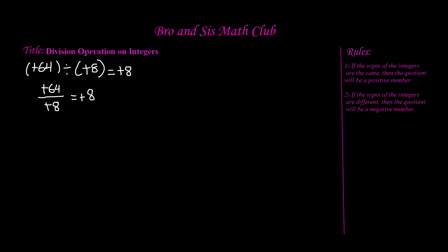Now let's go ahead and do another example. Let's say we have negative 17 divided by negative 3. Let's go ahead and read rule number 1 again. It says if the signs of the integers are the same — and yes, we do have the same signs, we have two negative numbers — then the quotient will be a positive number. So we're still going to have a positive answer. Let's write this in fraction form: negative 17 divided by negative 3.